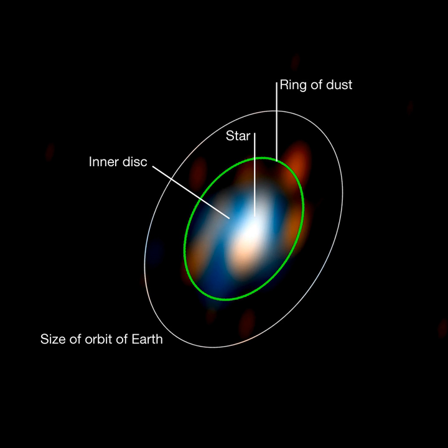At optical wavelengths, aperture synthesis allows the atmospheric seeing resolution limit to be overcome, allowing the angular resolution to reach the diffraction limit of the optics. Astronomical interferometers can produce higher resolution astronomical images than any other type of telescope. At radio wavelengths, image resolutions of a few micro arcseconds have been obtained, and image resolutions of a fractional milliarcseconds have been achieved at visible and infrared wavelengths.